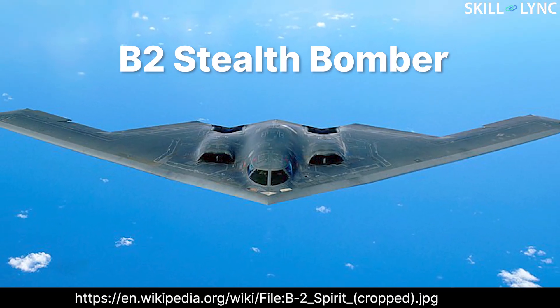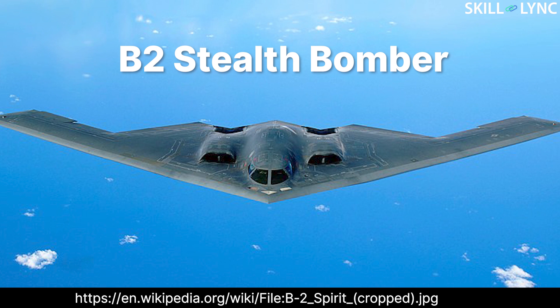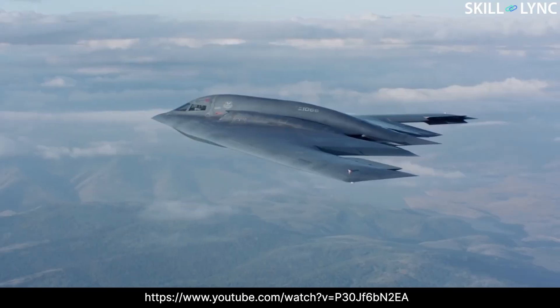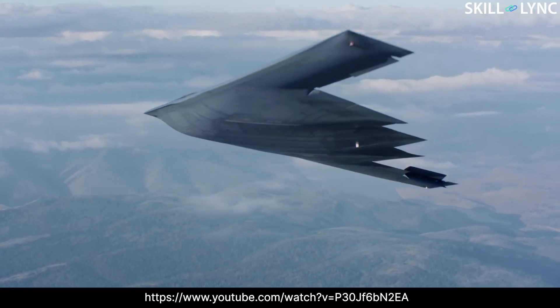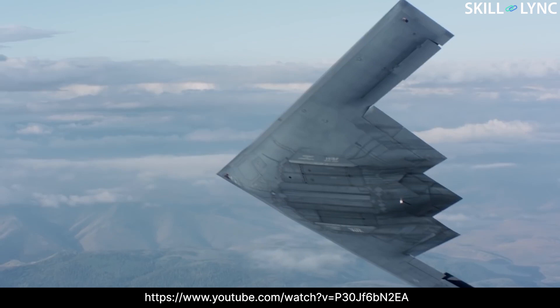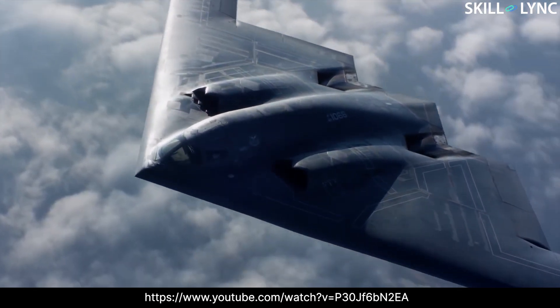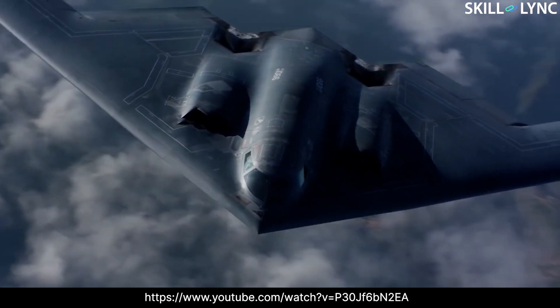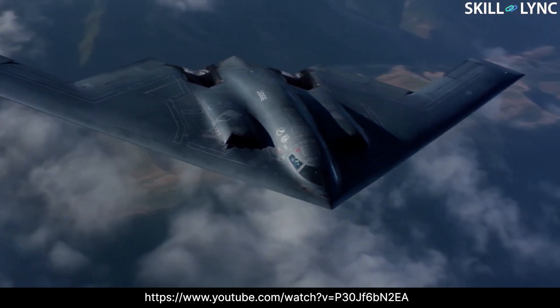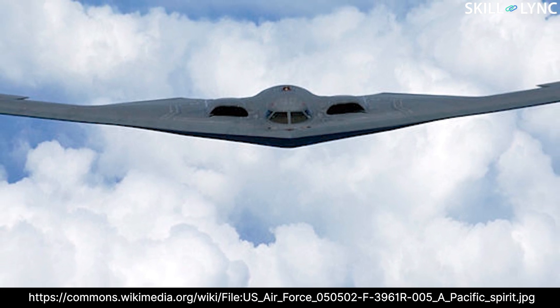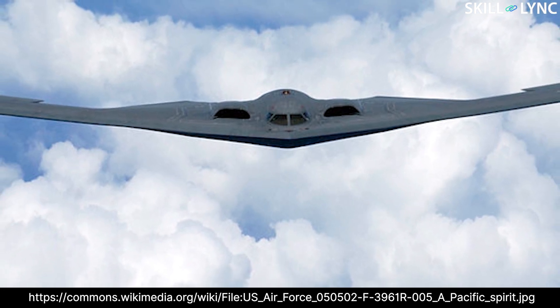The second prominent aircraft with this design is the B-2 stealth bomber. The B-2 was also developed by the Northrop Corporation after it won a contract from the government to design a high-altitude stealth bomber that would be virtually invisible to enemy radar. Keeping these requirements in mind, the engineers at Northrop designed an aircraft with the flying wing configuration, as it had the least amount of radar cross-section. The B-2 used a much more modern fly-by-wire system which helped in better control of the aircraft.